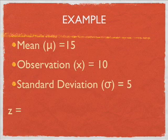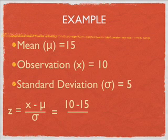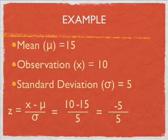So Z is equal to x minus mu, or the mean, divided by the standard deviation. The standard deviation is denoted by the letter sigma. This equals 10 minus 15 divided by 5, which is equal to negative 5 divided by 5, which is equal to negative 1.